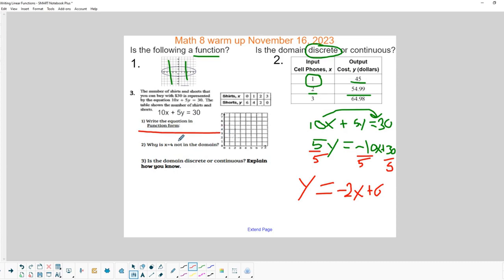Now, why is x equals 4 not in the domain? So if you look at this particular function right here, I want to make sure I'm not looking at something different. Why would 4 not be in the domain of this particular function? Well, if we graph it, let's take a look. y equals negative 2x plus 6, so we would start at 6. And go down 2 over 2, down 2 over 2, down 2 over 2. So this is what it would look like if we graph that function.